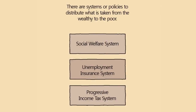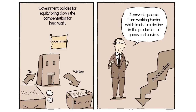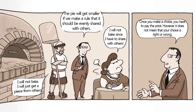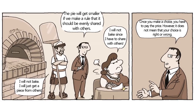There are systems and policies to distribute wealth from the wealthy to the poor. However, government policies aimed at equity bring down the compensation for hard work, which prevents people from working harder and leads to a decline in the production of goods and services. The pie will get smaller if we make a rule that it should be evenly shared.